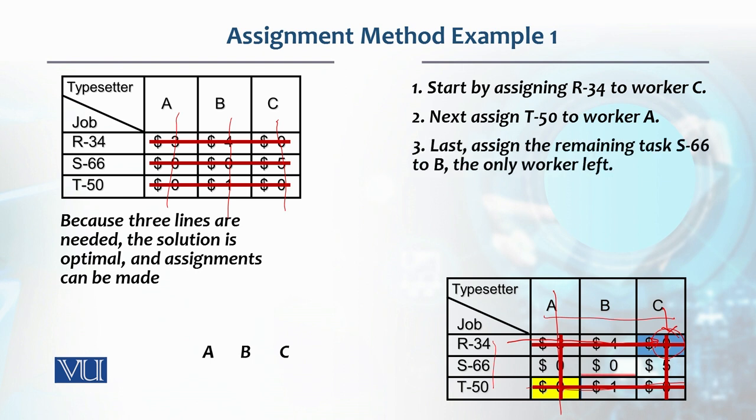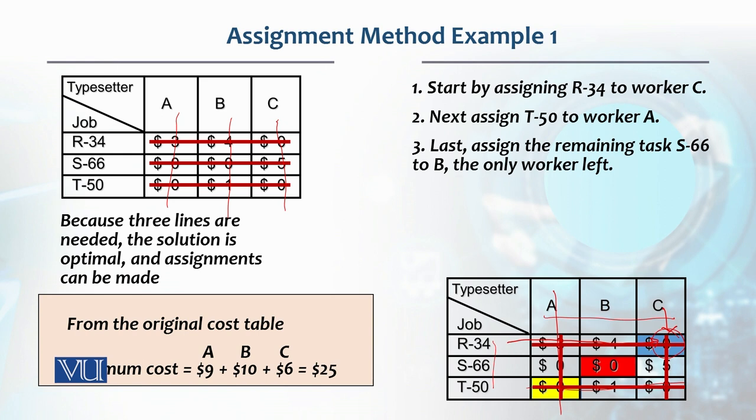What we have left is one task remaining and only one resource remaining. So S66, we assigned to B. So this will give us the minimum cost task assignments that these workers will perform. And if we look at our original cost table, on this basis A's cost was nine dollars, B's cost was ten dollars, and C's cost was six dollars. And that gives us the minimum lowest cost of twenty-five dollars by assigning these tasks to these resources.